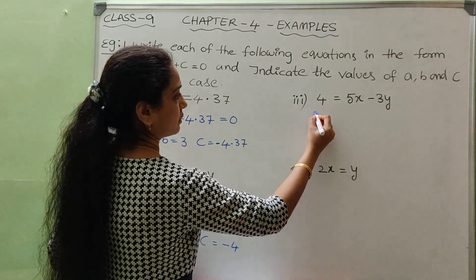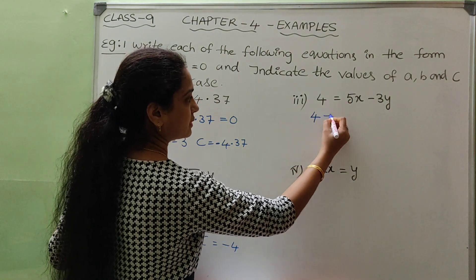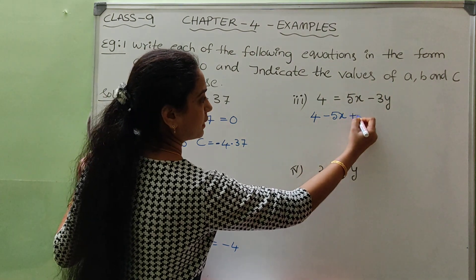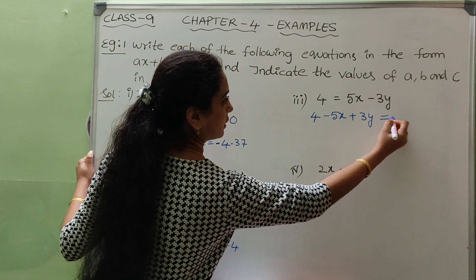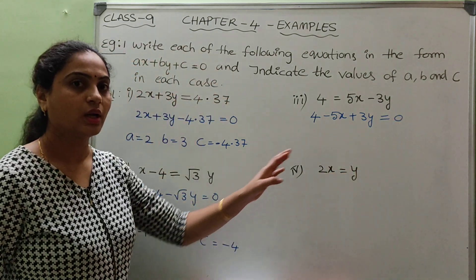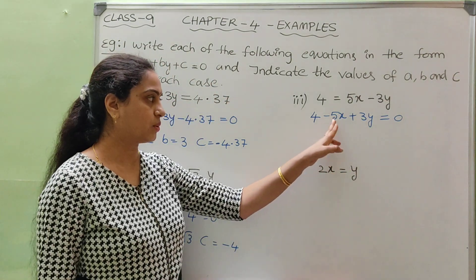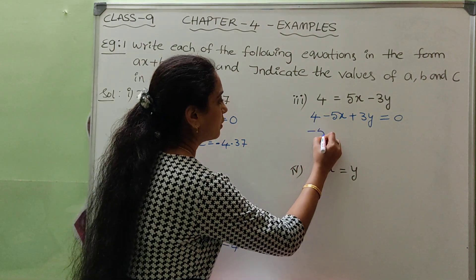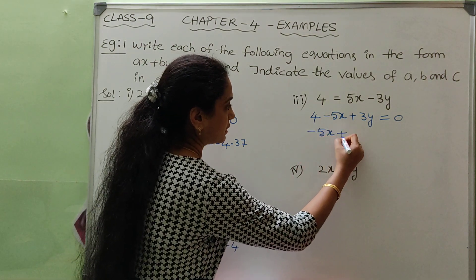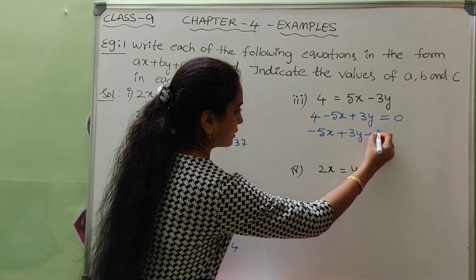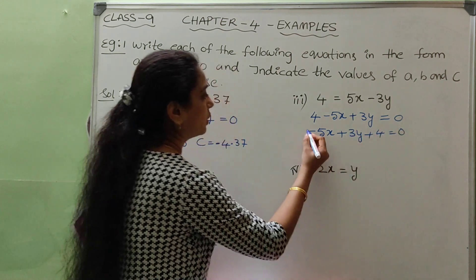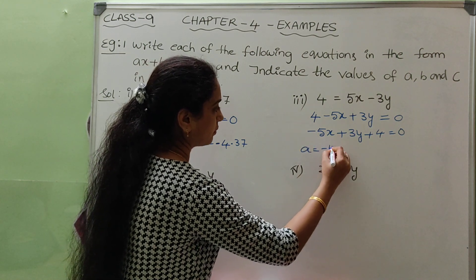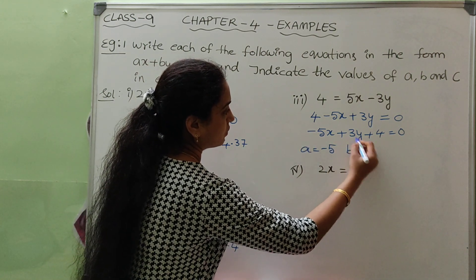Third one: 4 equals to 5x minus 3y. Rewriting: moving everything to the left side — minus 5x plus 3y plus 4 equals to 0. We write it in the form with x and y terms first: minus 5x plus 3y plus 4 equals to 0. So a equals to minus 5, b equals to 3, c equals to 4.